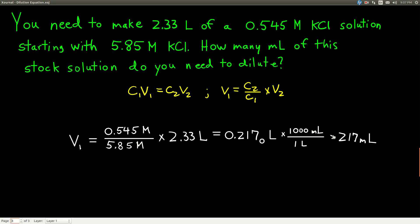So, we'd need to take 217 milliliters of 5.85 molar potassium chloride, add enough water to it so that we have a total of 2.33 liters, and then we would know we would have 0.545 molar potassium chloride.